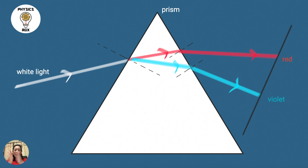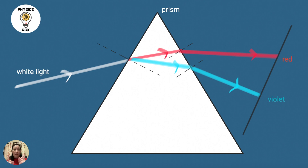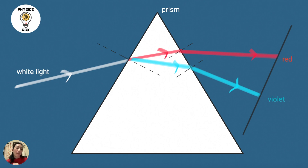Red on top and violet at the bottom — not only must you memorise the order of the colours, you must also know their positions. The reason light separates when it reaches the glass prism is that, as already noted, all these light colours travel at the same speed in vacuum. However, because different colours have different frequencies and different wavelengths, they will travel at different speeds inside the glass prism. Red travels at a higher speed than all the other colours, and violet travels at the slowest speed.